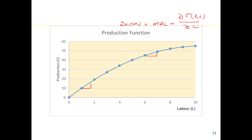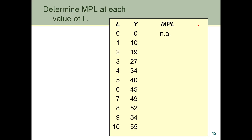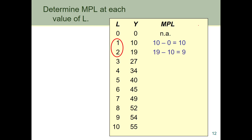Let's see how we can calculate the marginal product of labour given our production schedule. The marginal product of labour is the increase in output for each extra unit of labour input, so we're subtracting one level of output from another. Going from 0 to 1 unit of labour: 10 minus 0 equals 10. From 1 to 2 units: 19 minus 10 equals 9. From 2 to 3 units: output goes from 19 to 27, so the increase is 8. And so on.